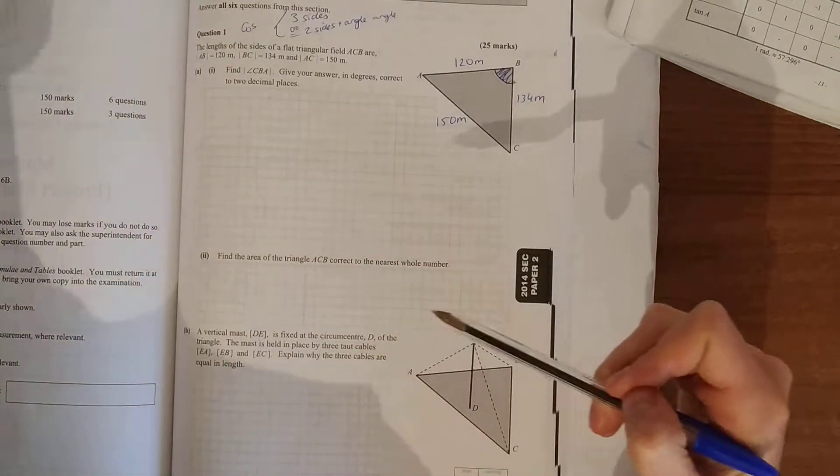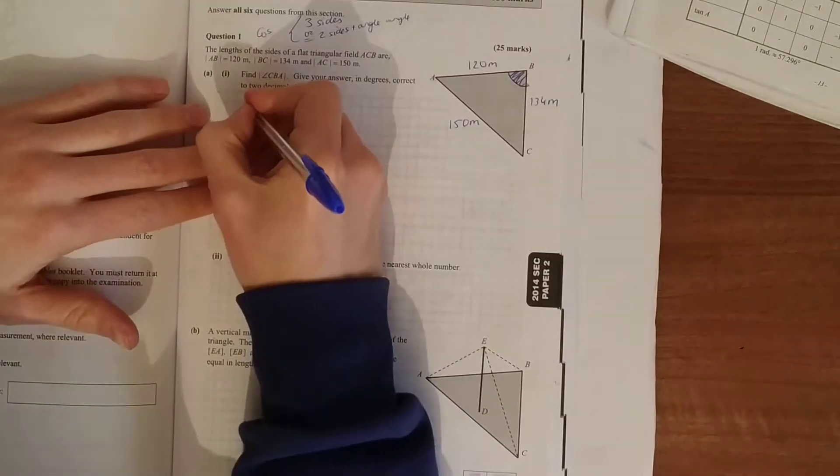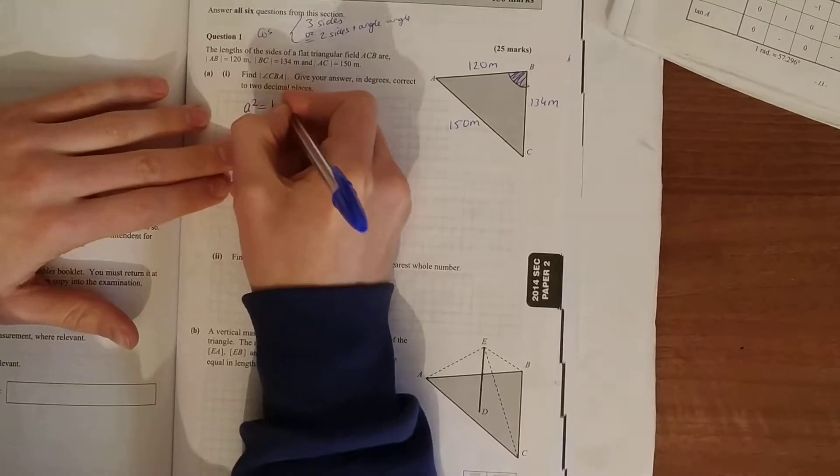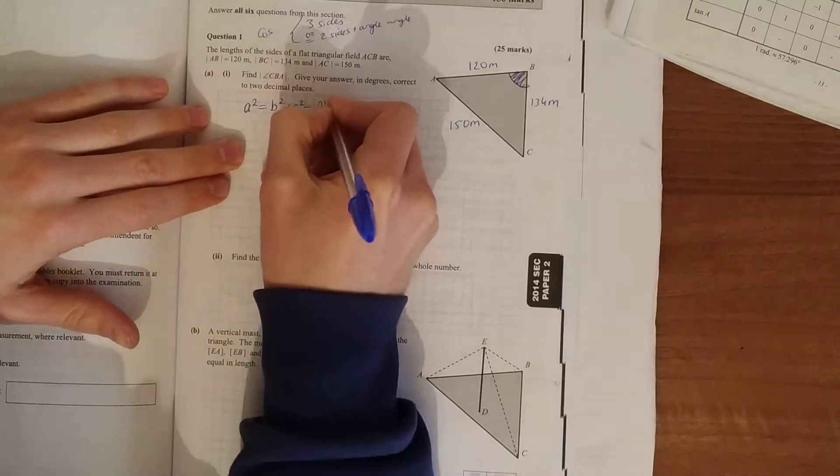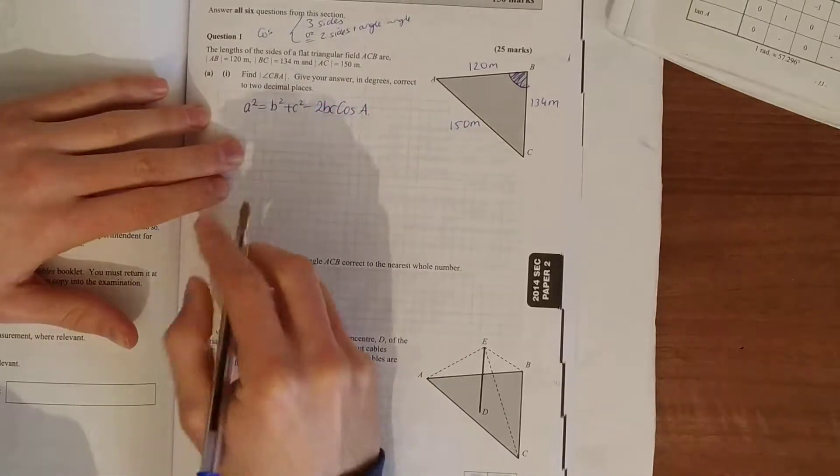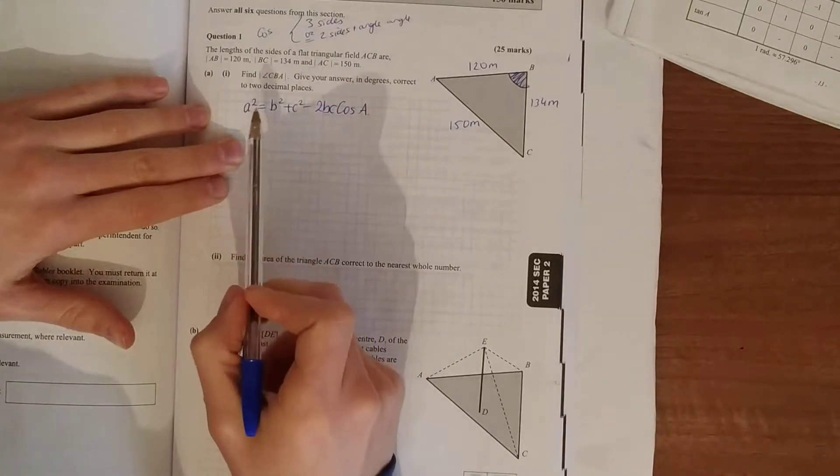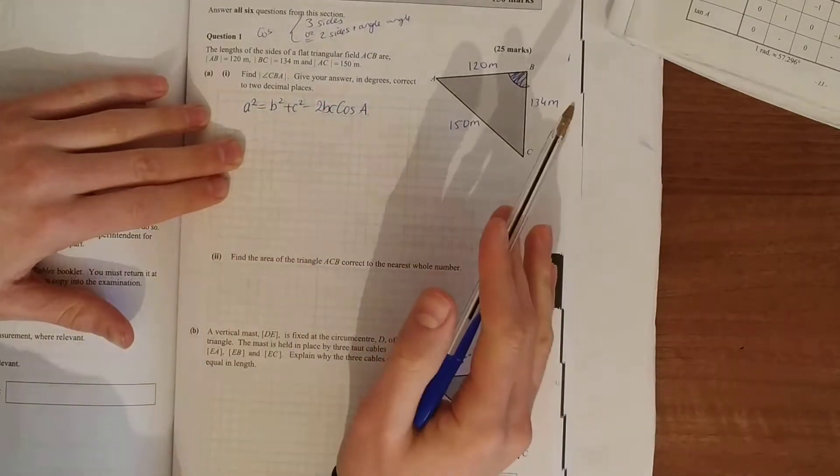And here we're given the three sides so we know we're using the cosine rule. The cosine rule states A squared is equal to B squared plus C squared minus 2BC cos A.